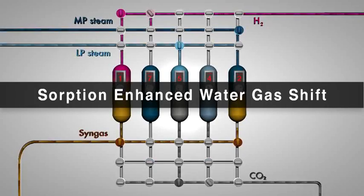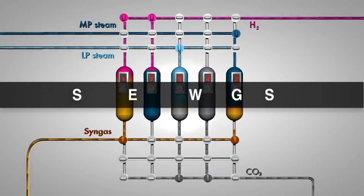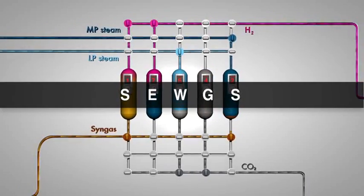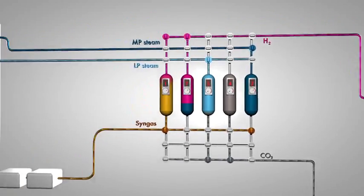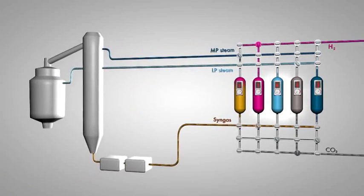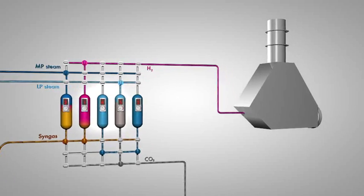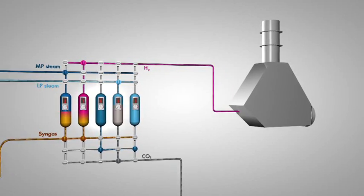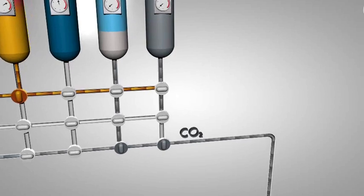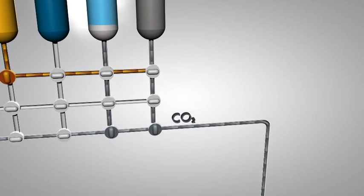Sorption Enhanced Water Gas Shift, or SEWAGS for short, is a process that converts CO and separates CO2 from a synthesis gas. The resulting hydrogen is directly used for power production in a gas turbine. The captured CO2 is transported to an underground storage facility.